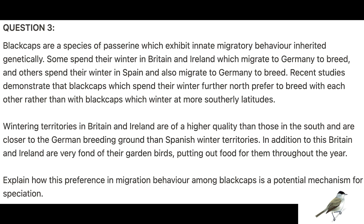So let's do one last question to really solidify our approach. Question three — this one's a bit of a beast so make sure you're listening well. Blackcaps are a species of passerine which exhibit innate migratory behavior inherited genetically. Some spend their winter in Britain and Ireland and migrate to Germany to breed, and others spend their winter in Spain and also migrate to Germany to breed. Recent studies demonstrate that blackcaps which spend their winter further north prefer to breed with each other rather than with blackcaps which winter at more southerly latitudes. Wintering territories in Britain and Ireland are of higher quality than those in the south and are closer to the German breeding ground. In addition, Britain and Ireland are very fond of their garden birds, putting out food for them throughout the year. Explain how this preference in migration behavior among blackcaps is a potential mechanism for speciation.